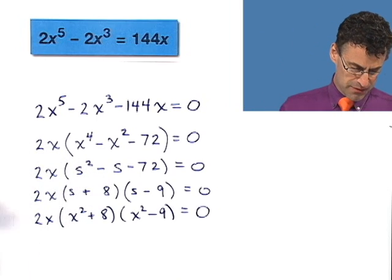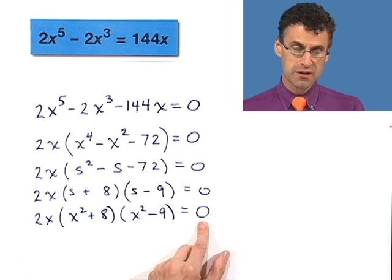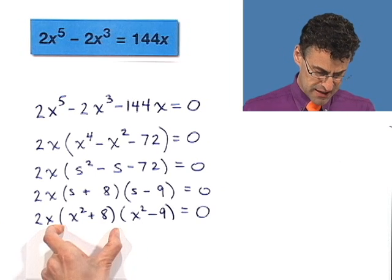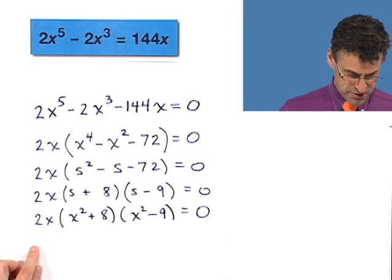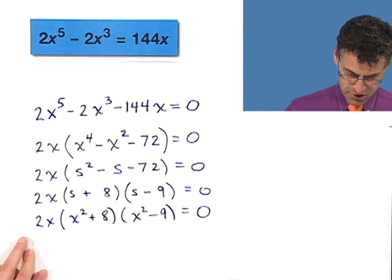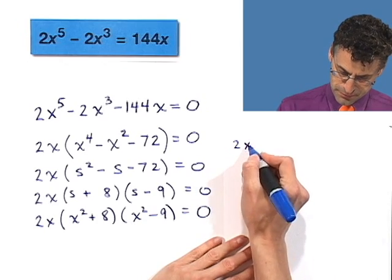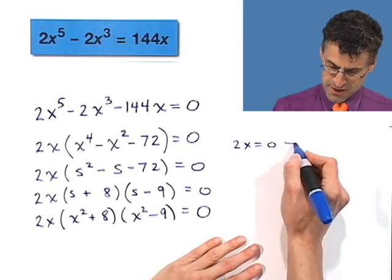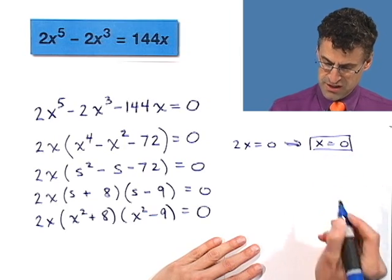How do I solve this? I've got the product of three things equaling zero. Therefore, either the first equals zero, the second equals zero, or the third equals zero. Let's take each case separately. So either 2x equals zero. If 2x equals zero, if I divide both sides by two, that tells me that x equals zero. So one solution is x equals zero.